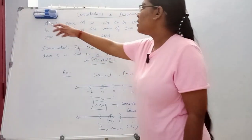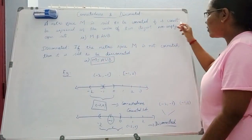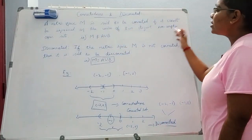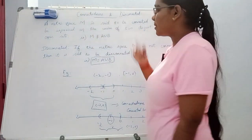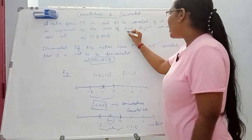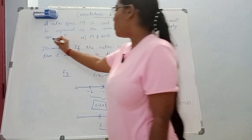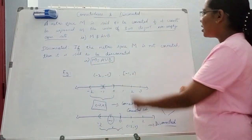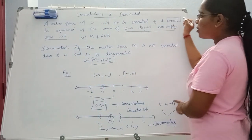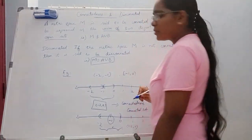The definition is: a metric space M is said to be connected if it cannot be expressed as the union of two disjoint non-empty open sets. So there are two open sets — it cannot be expressed as the union of two disjoint non-empty open sets.